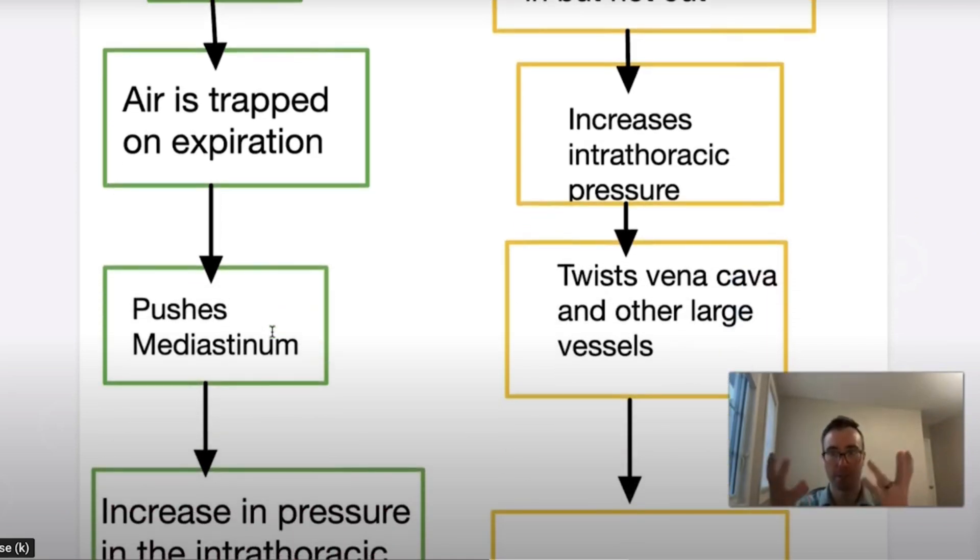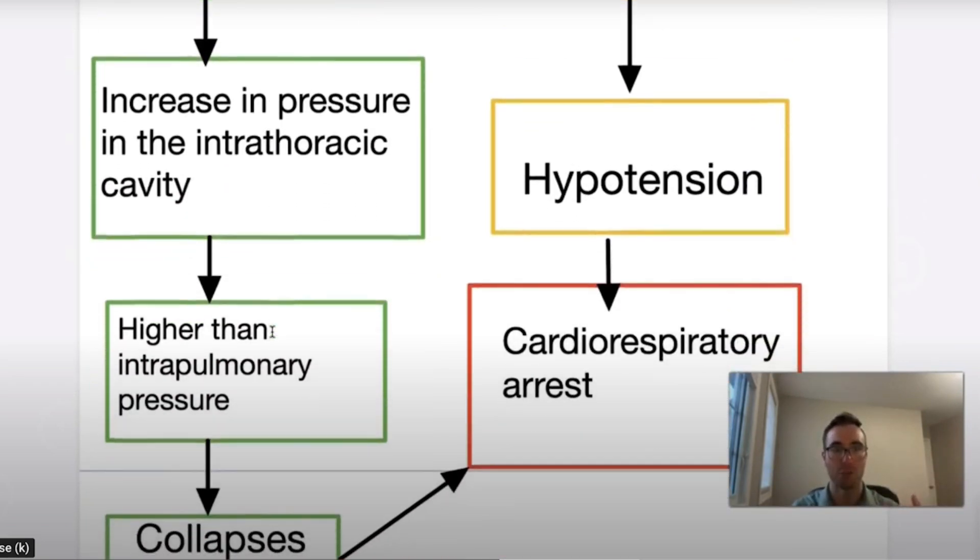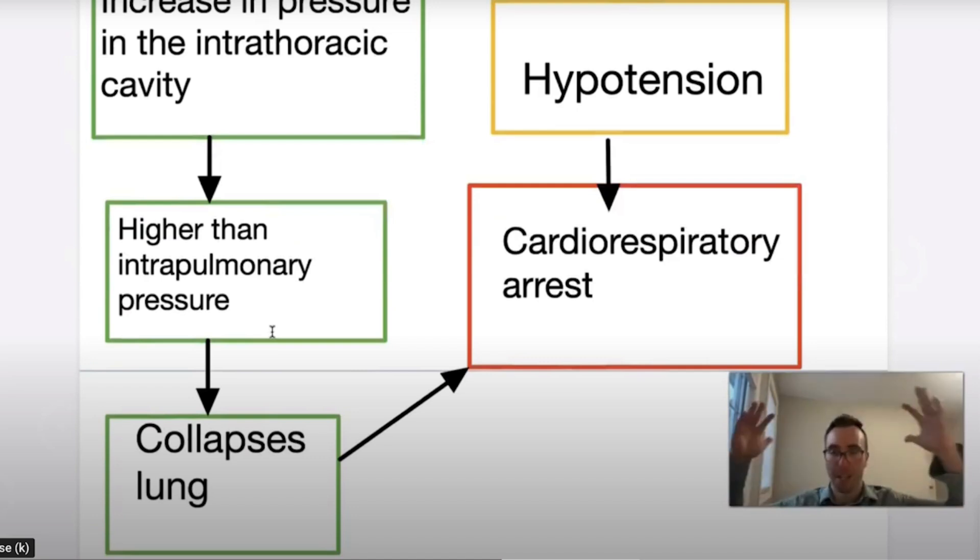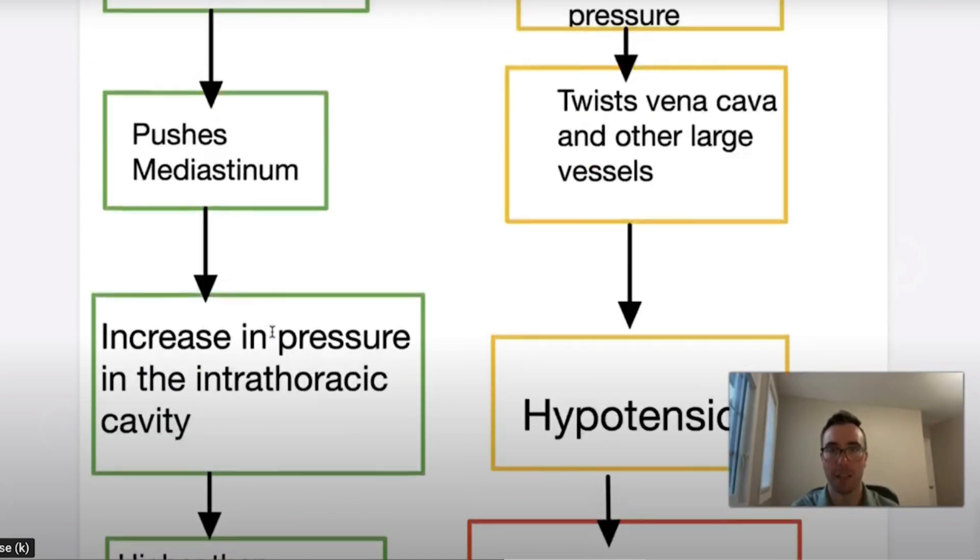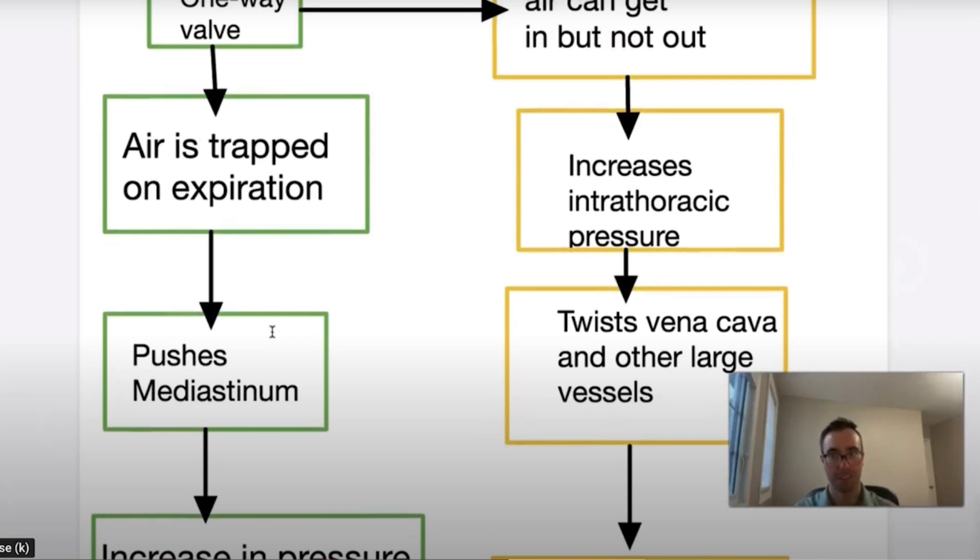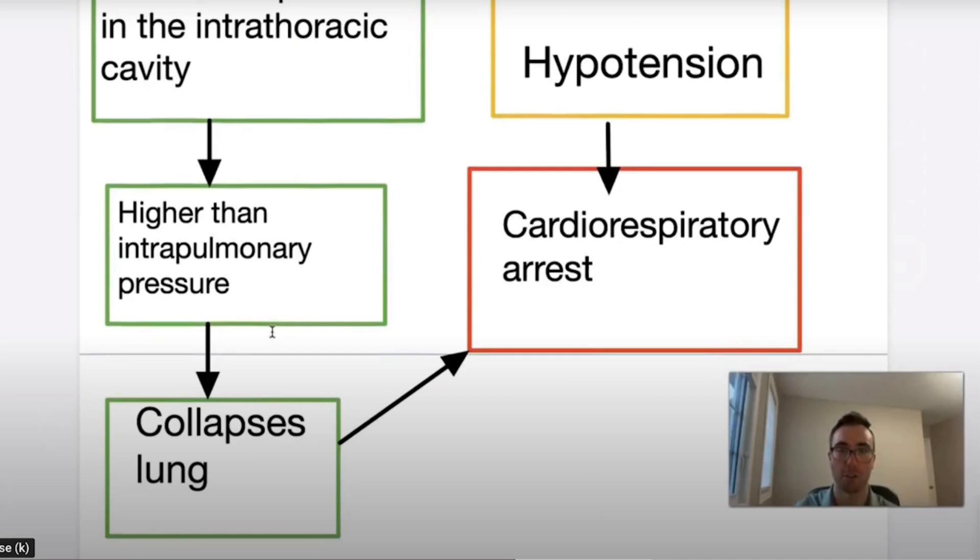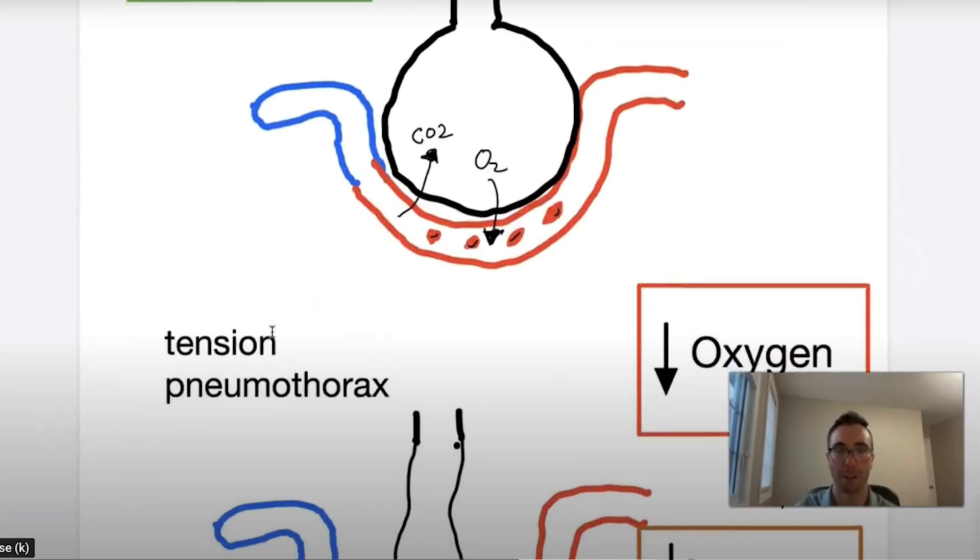And when this creates an increase in intrathoracic pressure, this leads to the mediastinum being pushed to the opposite side. And eventually the pressure in the chest exceeds intrapulmonary pressure and the lung cannot expand and it collapses. If you look at the cardiovascular implications again, if you increase your pressure in your chest, that twists off your great vessels and vena cava, that leads to hypotension and eventually cardiorespiratory arrest, if not rectified in a timely manner.